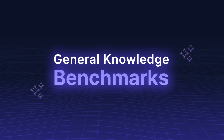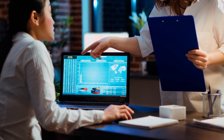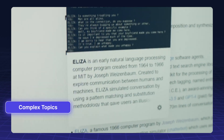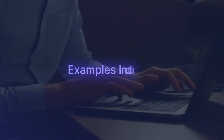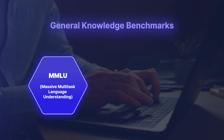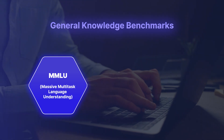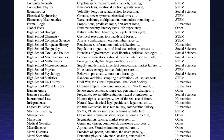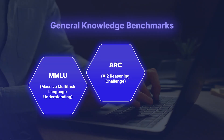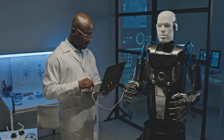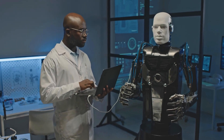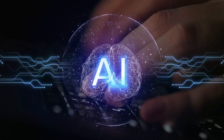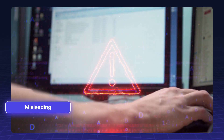General Knowledge Benchmarks test how well LLMs recall facts, reason through complex topics, and provide accurate answers. Examples include: MMLU (Massive Multitask Language Understanding), covering 57 subjects from history to science to test broad knowledge; ARC (AI2 Reasoning Challenge), evaluating scientific reasoning with multiple-choice questions; and TruthfulQA, ensuring AI-generated responses are factually accurate and not misleading.